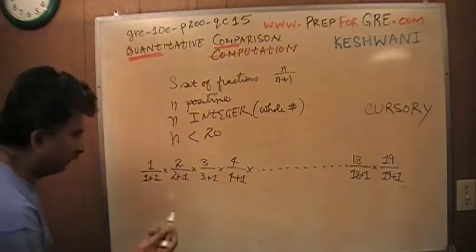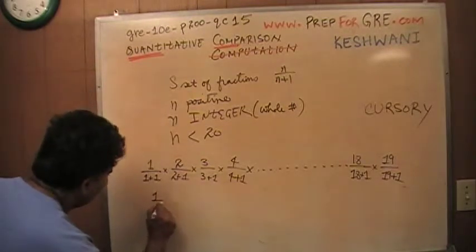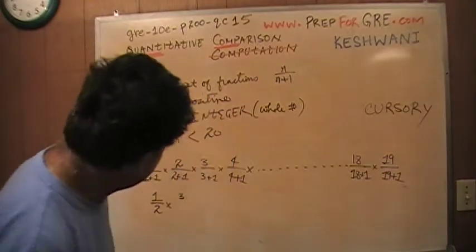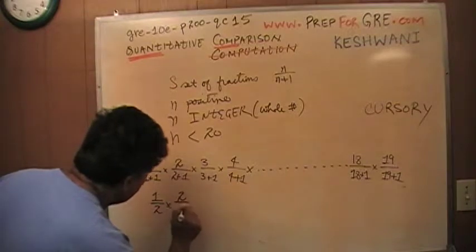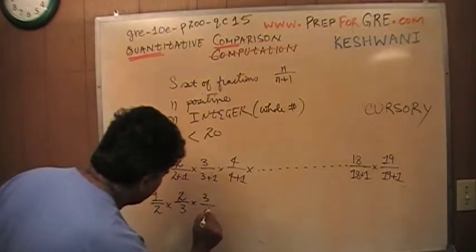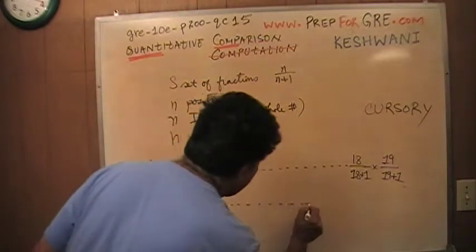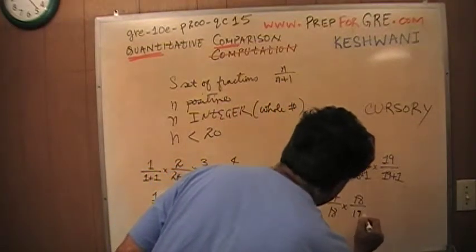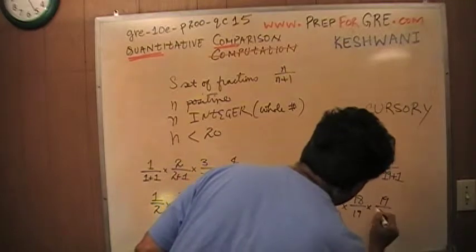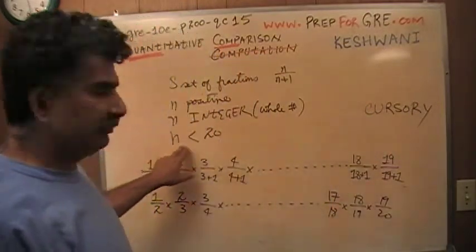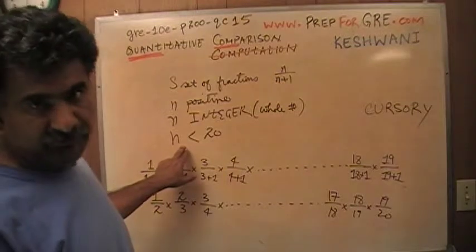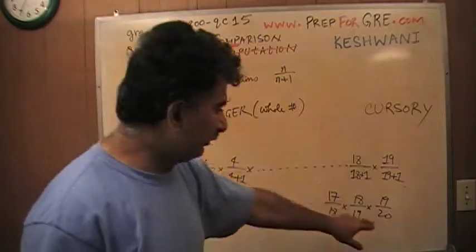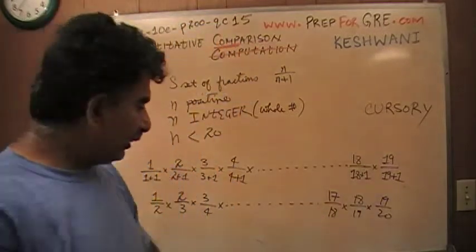Let me rewrite these fractions a little bit differently. 1 over 2 times 2 over 3 times 3 over 4 times 17 over 18 times 18 over 19 times 19 over 20. Where do I get 20 from? I thought n was supposed to be less than 20. n is less than 20 but at the bottom I have n plus 1. So if n is 19 plus 1 gives me 20. Now what happens when I take the product of all of these fractions? This is what happens.